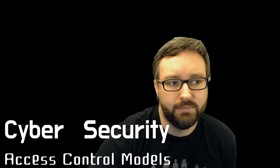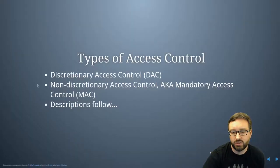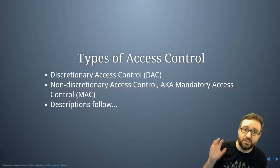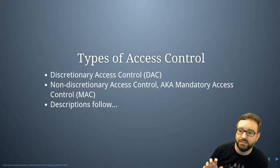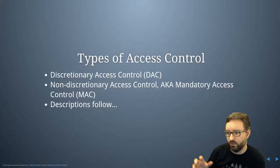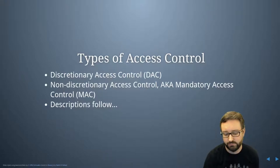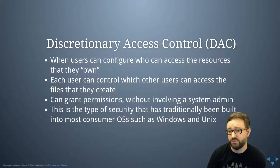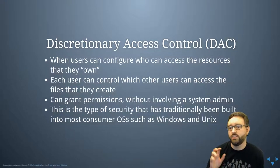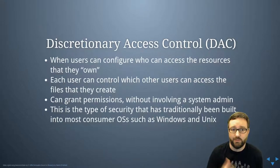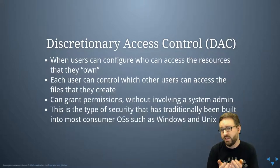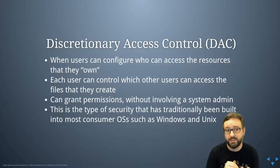Broadly, there are two main categories of access control models: discretionary access control and non-discretionary or mandatory access controls. Discretionary access controls is when users are allowed to own the files they create, having ownership over those files and deciding who's allowed to access them and in what ways.